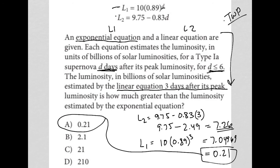Don't be confused by all the luminosities and billions or whatever. The question literally tells us to subtract what we get from the linear equation when d = 3 minus what we get from the exponential equation when d = 3.